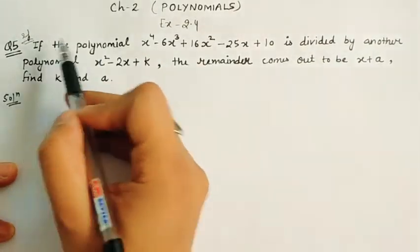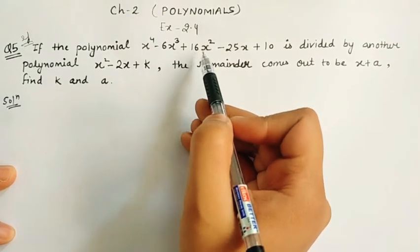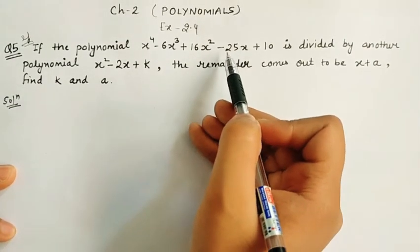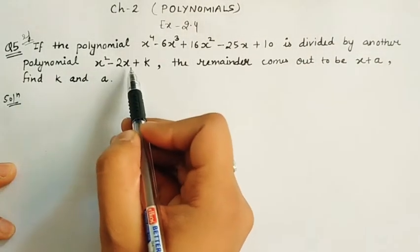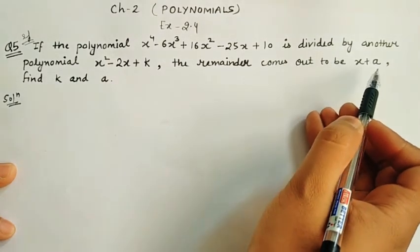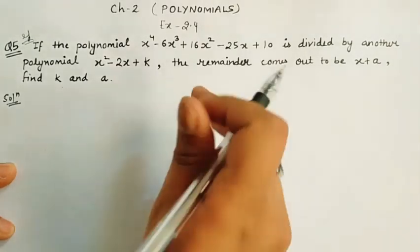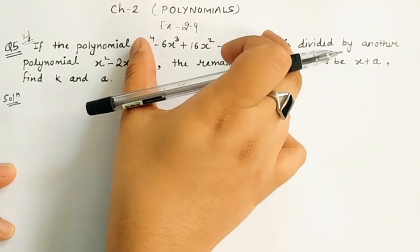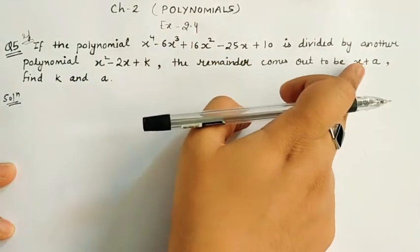So what is given here? If the polynomial x⁴ - 6x³ + 16x² - 25x + 10 is divided by another polynomial x² - 2x + k, then the remainder comes out to be x + a. Find k and a. So here,